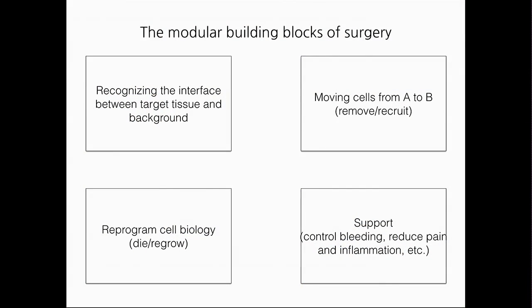So the last thing, in addition to acting on that interface and on those cells, you need to be able to provide support. For example, you want to regulate bleeding to prevent excessive bleeding from that surgery. You want to reduce pain. You want to negate inflammation. There are many things you need to do that are not directly related to that incision you're doing right now. So you already know that these robots can be programmed to carry out all those tasks.